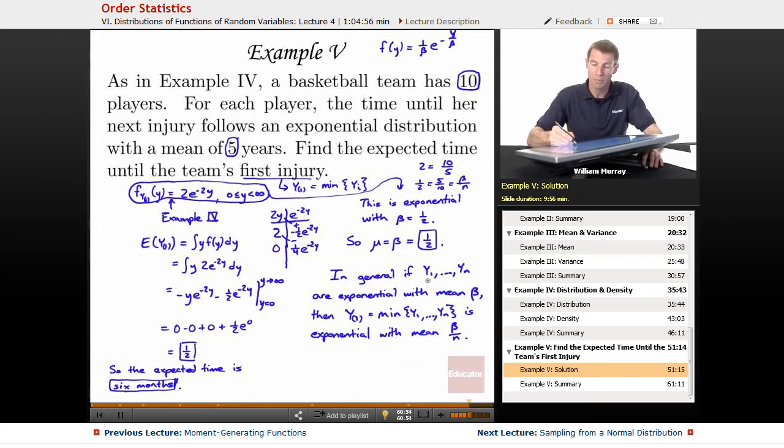So, if you start out with an exponential distribution with mean beta, and cobble together n of them, and look at the minimum, then it's exponential with mean beta over n. That's not too surprising, if you think about the basketball players.